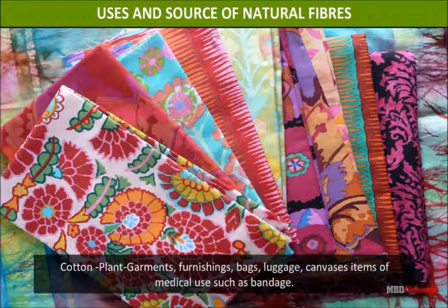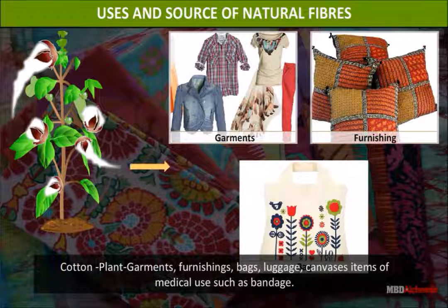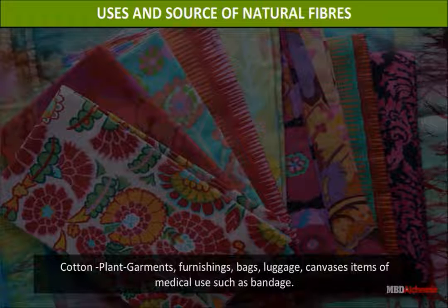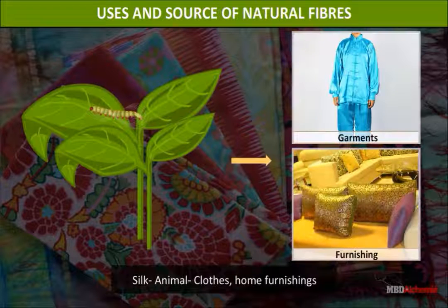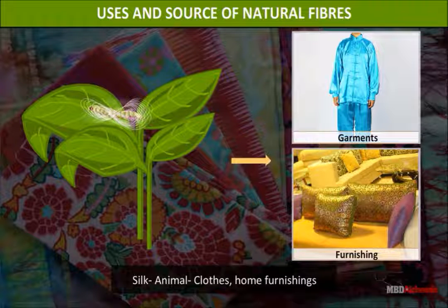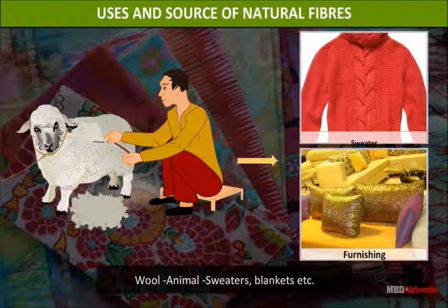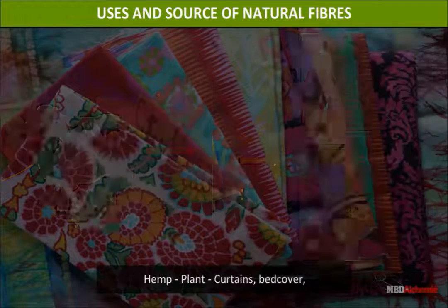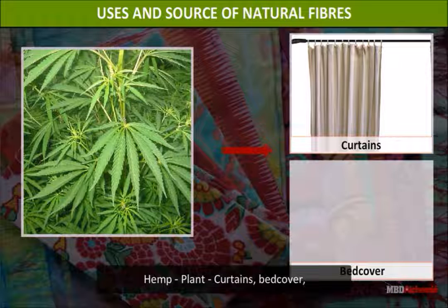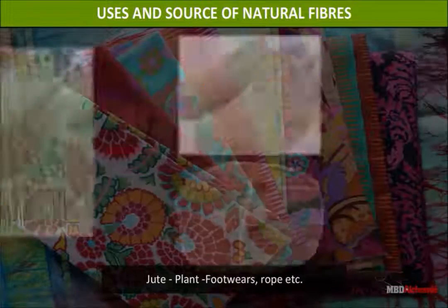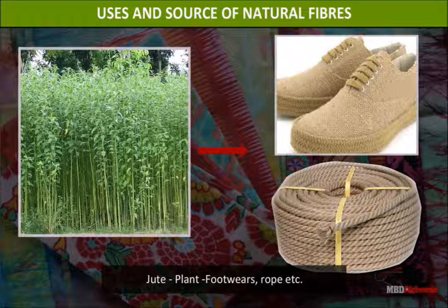Summary of fiber sources and uses: Cotton comes from plants and is used to make garments, furnishings, bags, luggage, canvases, and items of medical use such as bandages. Silk is obtained from silkworms and is used to make clothes and home furnishings. Wool comes from animals and is used to make sweaters, blankets, etc. Hemp comes from plants and is used to make curtains, bed covers, etc. Jute comes from plants and is used to make footwear, rope, etc.